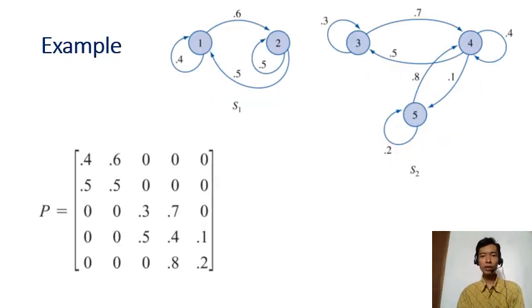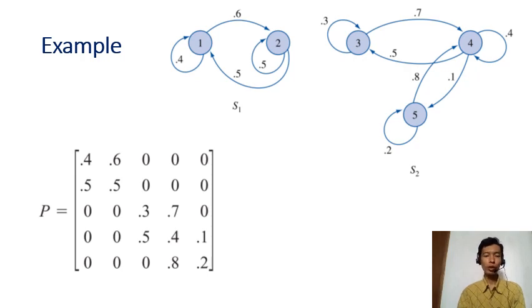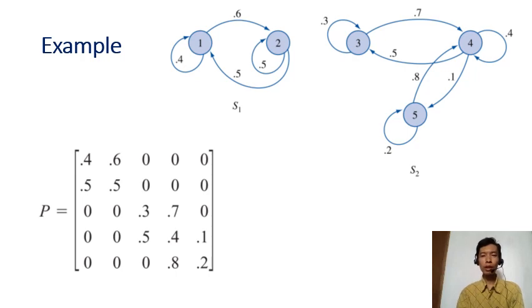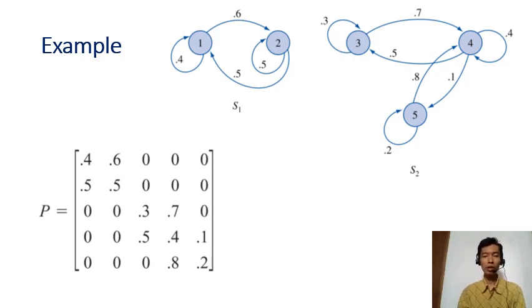We are going to use this Markov chain example to see the classification of states. You are given the graph and also the transition probability matrix. From the graph, although they look like we have two systems here, this example actually talks about just one single system.